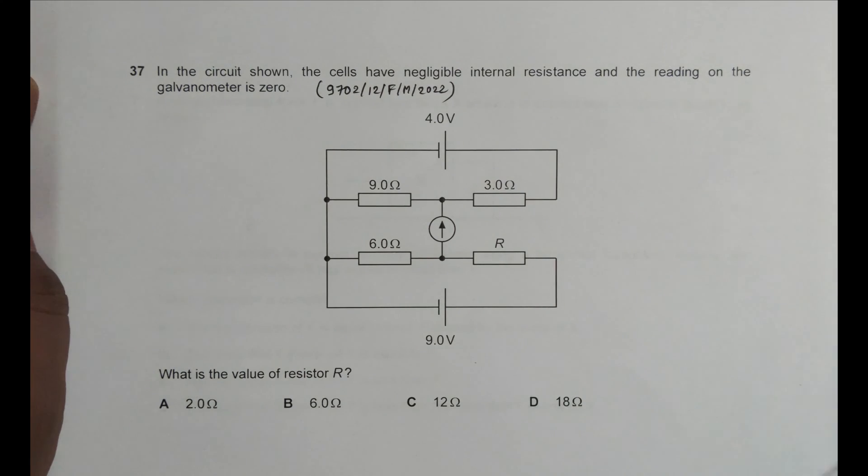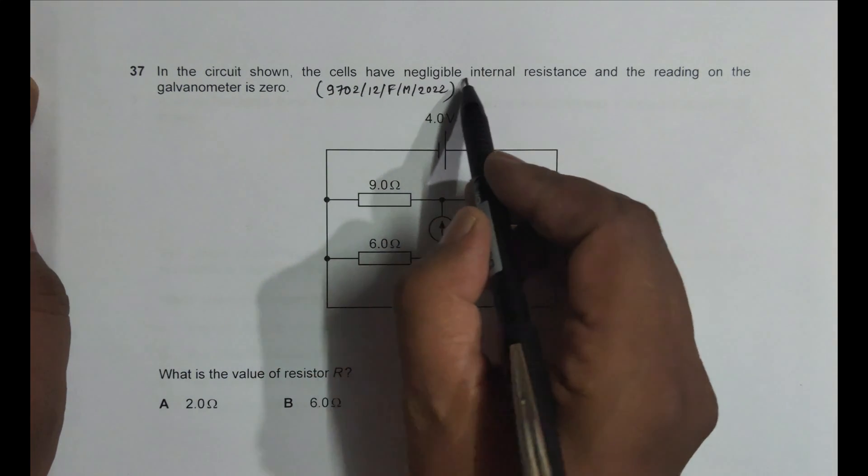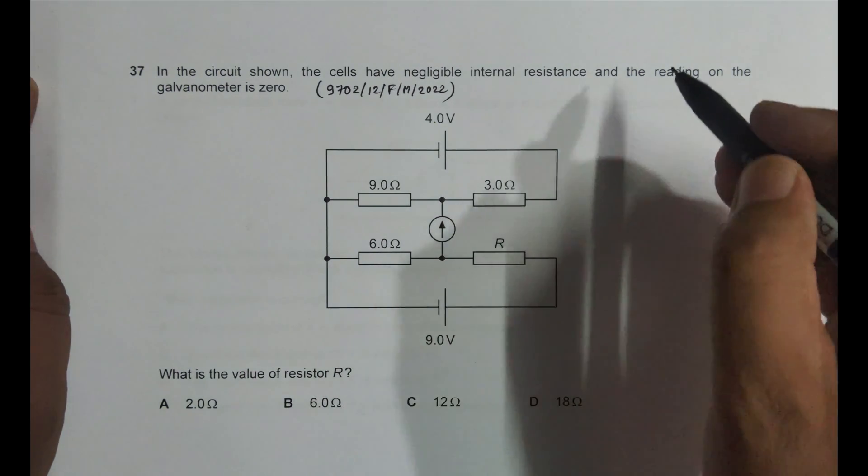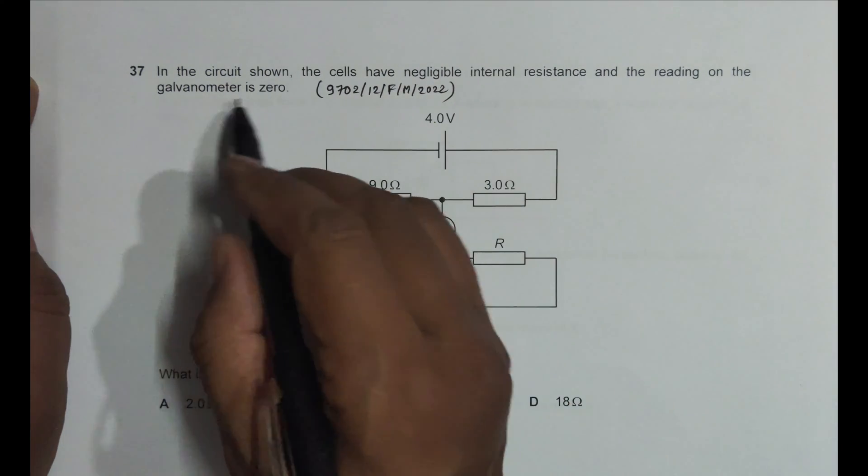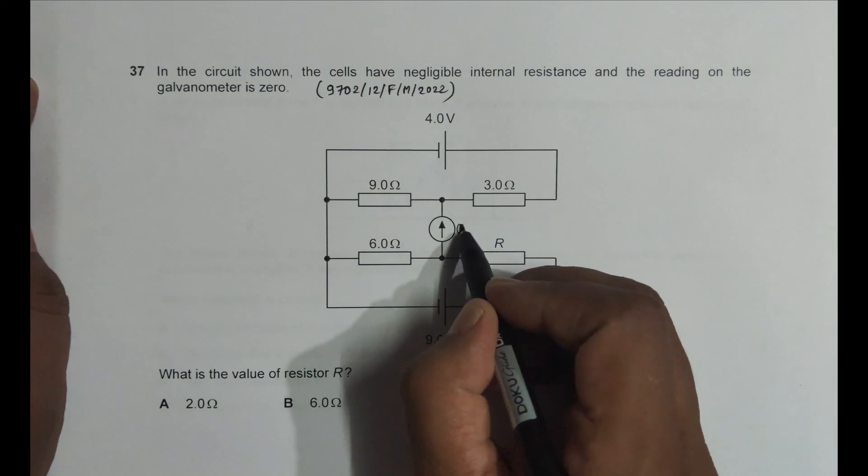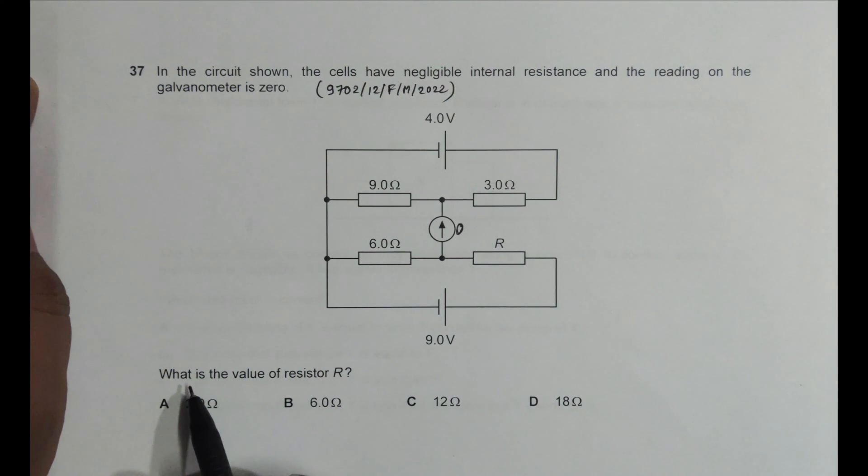It says in the circuit shown, the cells have negligible internal resistances, so no resistance here, no resistance here, and the reading on the galvanometer is zero. So it is zero here, zero reading here is zero. So from here we have to find what is the value of resistor R. The question is very short but the concepts hidden are very long here.